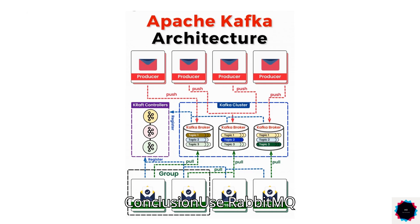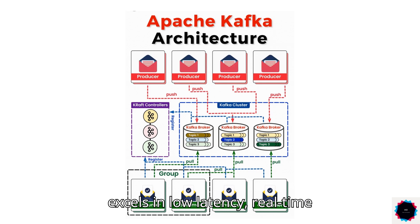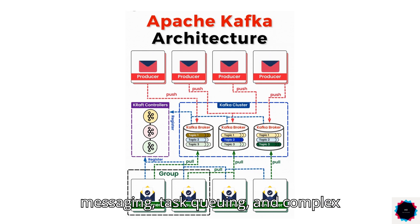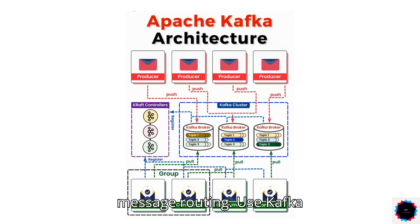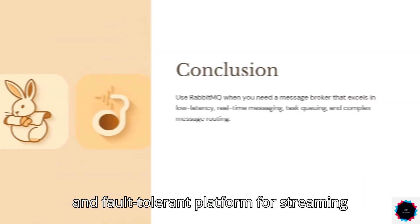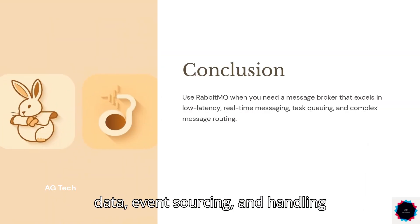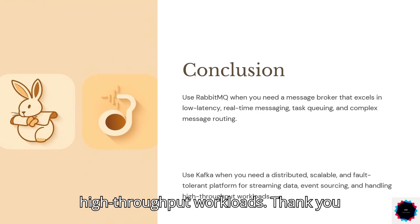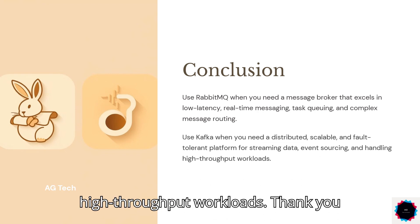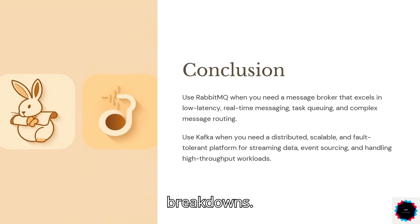In summary: Use RabbitMQ when you need a message broker that excels in low-latency, real-time messaging, task queuing, and complex message routing. Use Kafka when you need a distributed, scalable, and fault-tolerant platform for streaming data, event sourcing, and handling high-throughput workloads. Please like and follow for more quick tech breakdowns.